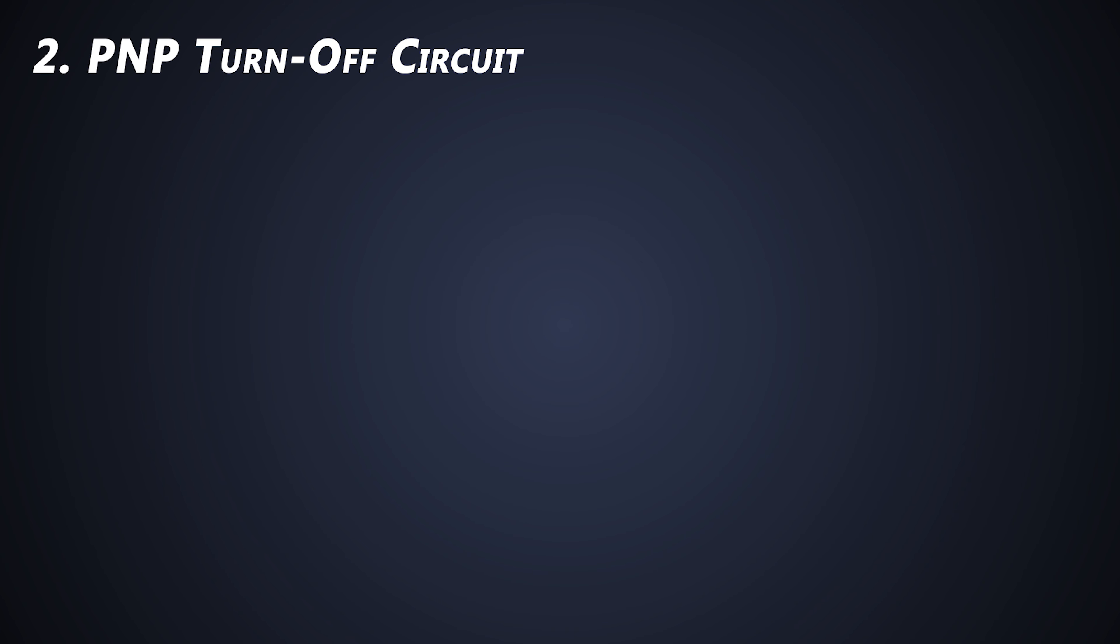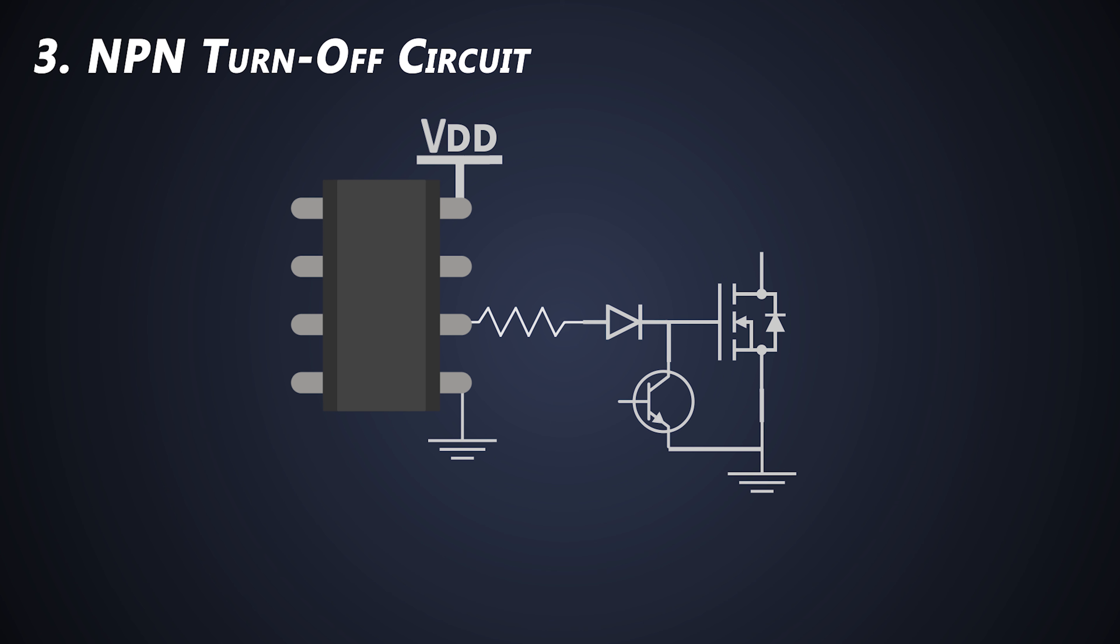The next circuit to examine is the local NPN turn off circuit. Similar to the PNP solution, we can use NPN BJT. We'll call it as Q1. In this case, the gate discharge current is well localized. The NPN transistor holds the gate closer to the ground than its PNP counterpart. Also, this implementation provides a self-biasing mechanism to keep the MOSFET off during power.